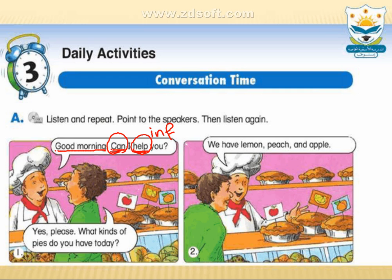Good morning. 'Can I help you?' Remember, because the question starts with 'can,' the answer will start with yes or no. He answers the baker with yes: 'Yes, please. What kind of pies do you have today?' Notice 'do' — this question is in the present tense, and 'have' is in the infinitive.